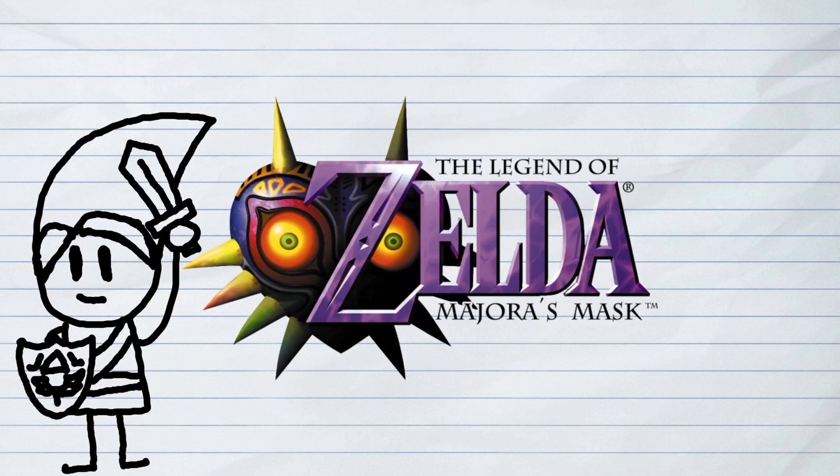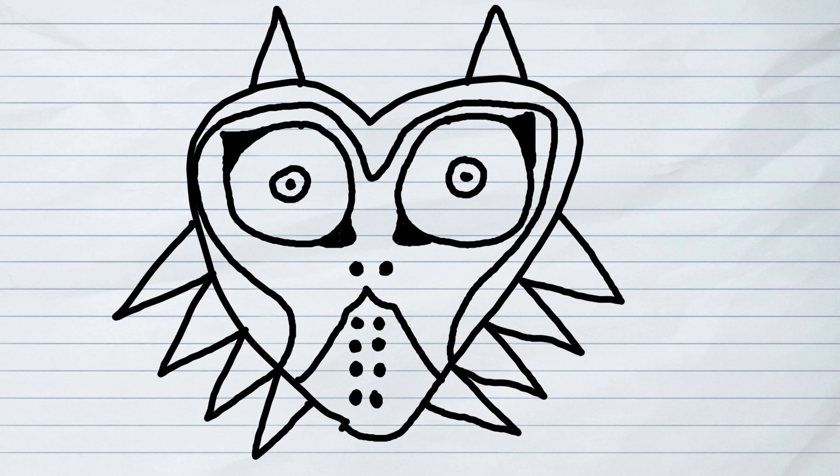The Legend of Zelda Majora's Mask is a 3D action-adventure game developed and published by Nintendo. Released in 2000 on the Nintendo 64 and subsequently re-released on later systems, the game follows series protagonist Link in his efforts to save a parallel world from the moon falling into the Earth. Written by Mitsuhiro Takano, Shigeru Miyamoto, and Yoshiaki Koizumi, The Legend of Zelda Majora's Mask contains psychoanalytic elements that represent and rationalize mental health issues such as depression and grief.